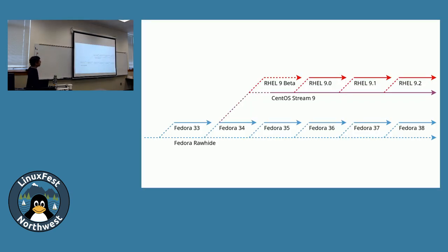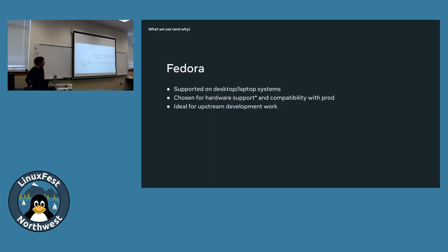CentOS is branched off from Fedora every six releases, so every three years. This year CentOS 10 should come out. We have Fedora machines running on desktops and laptops — not as a primary thing. At my old company we used Fedora because Linux laptops are cheaper, but Silicon Valley everyone wants a Mac because it's shiny. To be fair, with Silicon Macs I don't blame them — I use a Mac too.